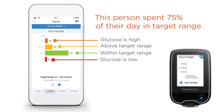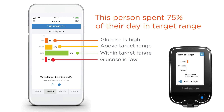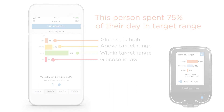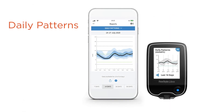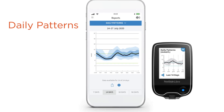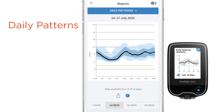If you use a reader, you can see when you were above, below, or within your target range. The daily patterns report shows you a summary of your glucose on a typical day. Your sensor is reading your glucose every minute — that's a lot of information. This report helps summarize information on one simple graph.